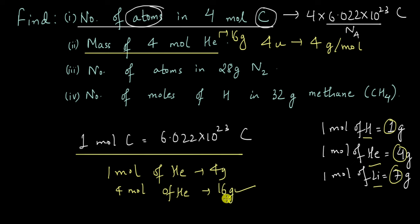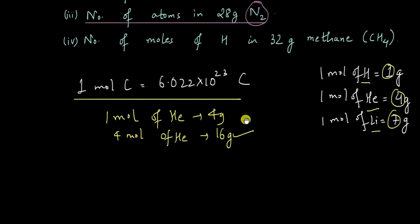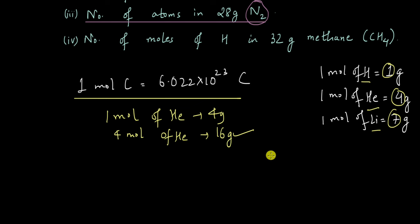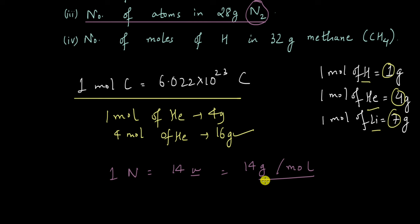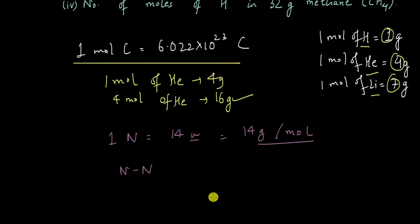That is the power of the definition of mole. Now let us move to the third problem: finding the number of atoms in 28 grams of N2. This is the first time we are dealing with a molecule. From the periodic table, the mass of one atom of nitrogen is 14u, which means there are 14 grams in one mole of nitrogen. N2 has two nitrogen atoms, so one mole of the nitrogen molecule has double the mass — 28 grams.